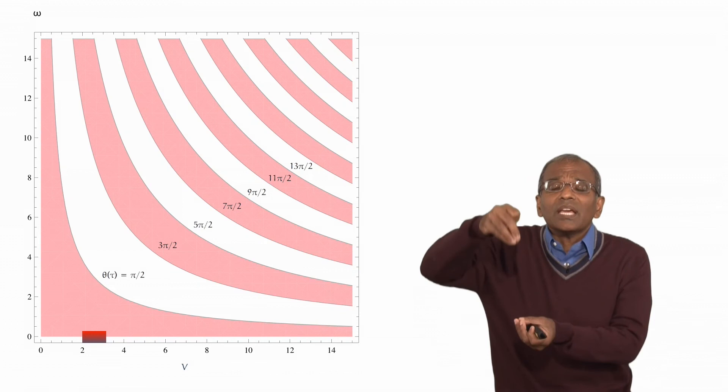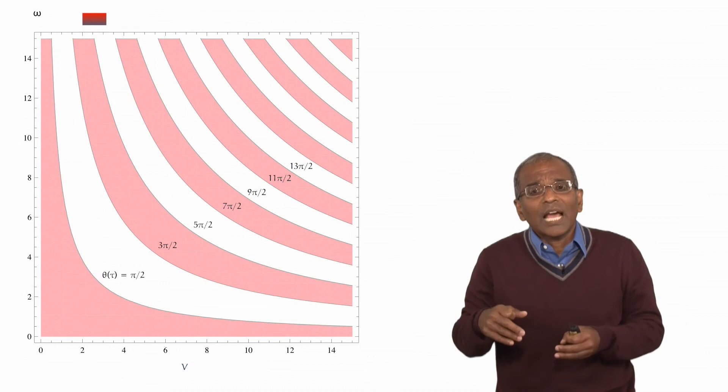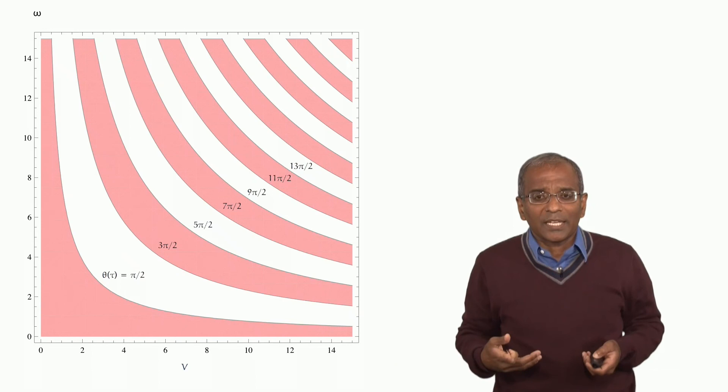On the other, in terms of the angular velocities, we are nowhere near where we need to be. I'm showing you angular velocity up to about 14 radians per second. And what we really need is something like 225 to 250 radians per second.